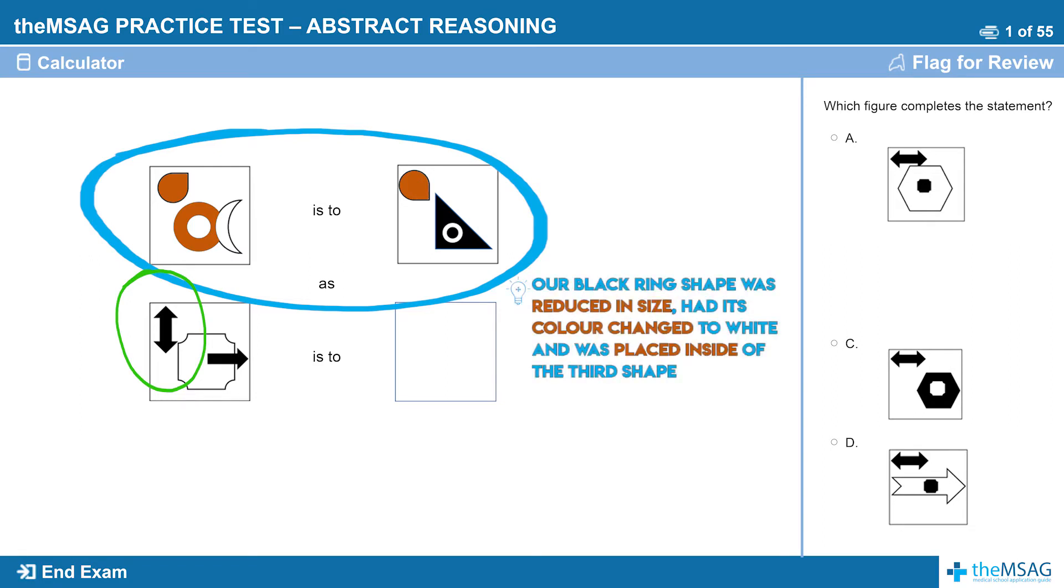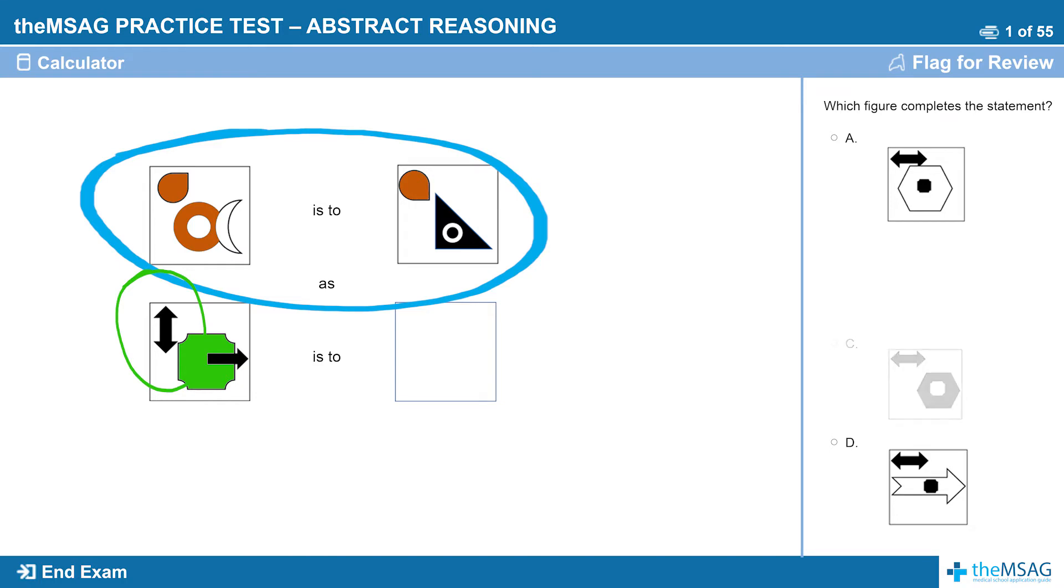Second, our black ring shape was reduced in size, had its color changed to white, and was placed inside of a third shape. Therefore our middle shape, the square with the notched edges, needs to do the same. This eliminates the third test shape as the square with the notched edges was reduced in size but did not change color.